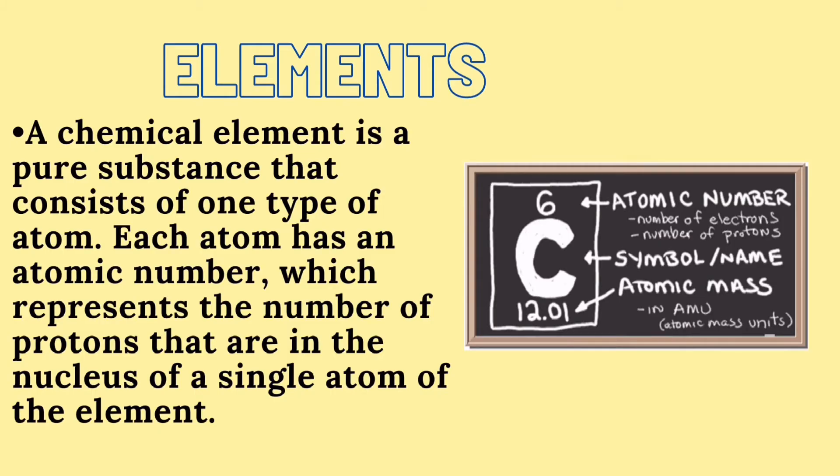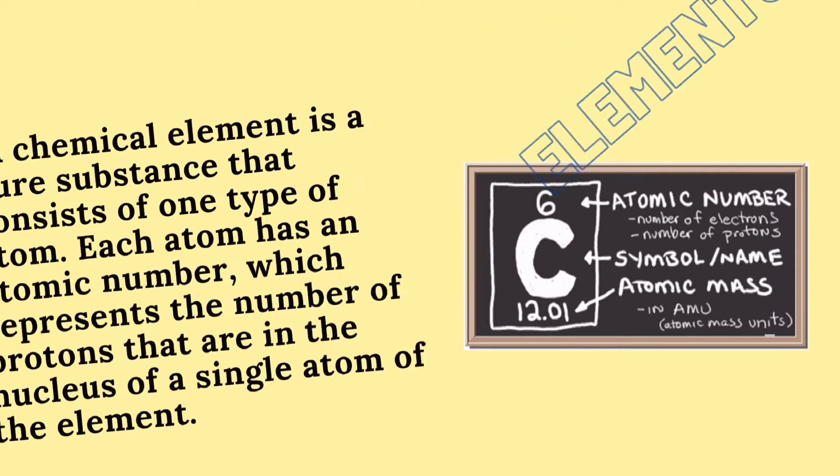Elements: A chemical element is a pure substance that consists of one type of atom. Each atom has an atomic number which represents the number of protons that are in the nucleus of a single atom of the element.